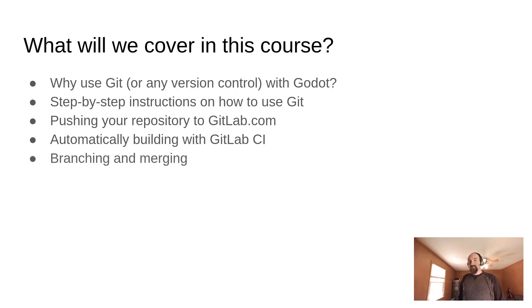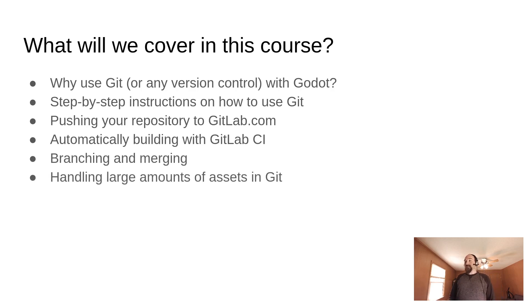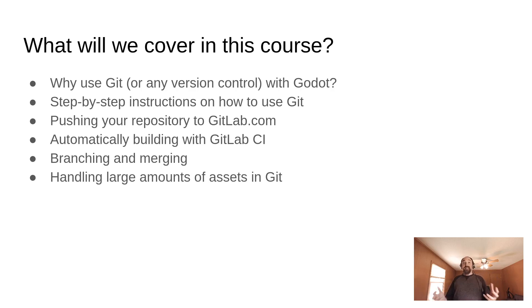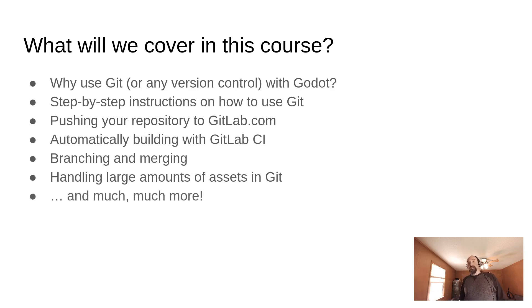We're going to talk about branching and merging in the context of a Godot game project, as well as handling a large amount of assets in Git. Some games don't have that many assets — like 2D games might only have megabytes worth — but there are other games that have gigabytes worth of game assets, and handling those can be a little tricky in Git. So we're going to have a part that addresses that, as well as much, much more.